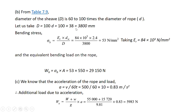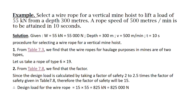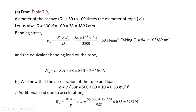Now we will calculate the sheave diameter from table 7.9. For different types of rope, this table gives the minimum and preferred sheave diameters. Our rope is 6×19 and it is used for mine hoists, so the preferred sheave diameter is 100 times D. Putting the value of D (38 mm) into this expression, the sheave diameter comes out to be 3800 mm.